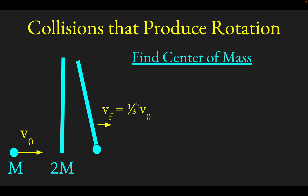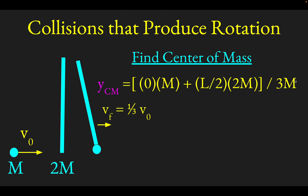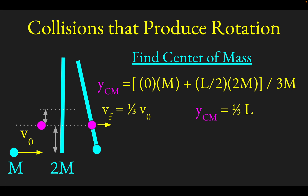Let's look at the center of mass of the system, because the system is going to rotate around that point once the ball and stick come together. Taking the lowest point — where the ball and end of the stick are — as y equals zero, the ball of mass M is at y = 0 and the stick's center of mass at L/2 is worth 2M. Dividing by total mass 3M, the center of mass is one third of the way up the stick.